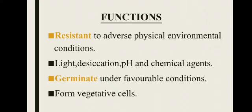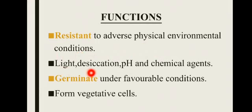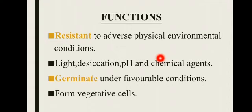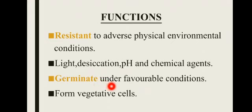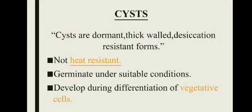Spores کے function کے حوالے سے، یہ resistant ہوتے ہیں to adverse physical environmental conditions۔ جب environmental conditions drastic ہو جاتی ہیں، مثلاً temperature زیادہ ہو، desiccation یعنی پانی کی کمی ہو، pH زیادہ یا کم ہو، یا chemical agents زیادہ یا کم ہو جائیں، تو یہ resistance create کرتے ہیں اور bacteria cell کو خراب نہیں ہونے دیتے۔ جب conditions favorable ہو جائیں تو یہ دوبارہ germinate کرنا شروع ہو جاتے ہیں اور vegetative cell کی growth دوبارہ start ہو جاتی ہے۔